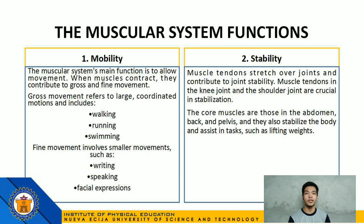The functions of the muscular system are the following. Number 1: Mobility — the muscular system's main function is to allow movement. When muscles contract, they contribute to gross and fine movement. Gross movement refers to large, coordinated motions and includes walking, running, and swimming. Fine movement involves smaller movements such as writing, speaking, and facial expressions. Number 2: Stability — muscle tendons stretch over joints and contribute to joint stability. Muscle tendons in the knee joint and shoulder joint are crucial in stabilization. The core muscles in the abdomen, back, and pelvis also stabilize the body and assist in tasks such as lifting weights.